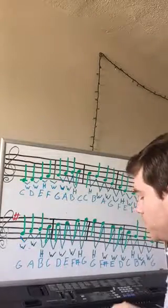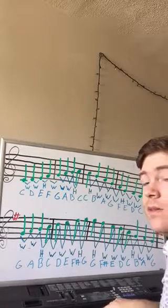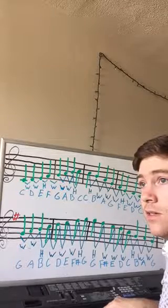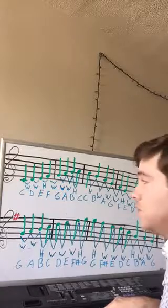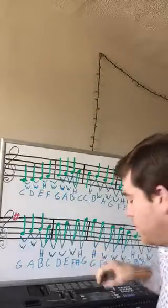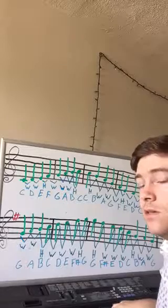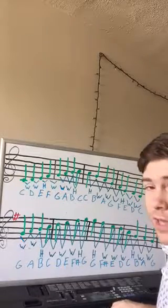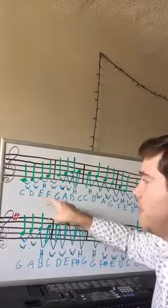Now that is what is known as a whole step, and it sounds like this. Sing along with that — C, D, C, D. And then we go from D to E, also a whole step. D, E, D, E. And then after that, we encounter our first half step, and that is E to F.